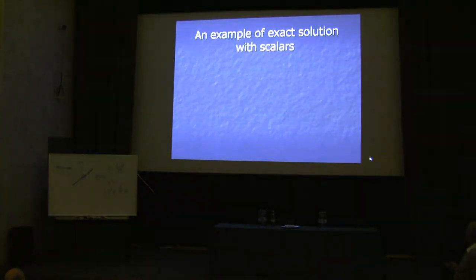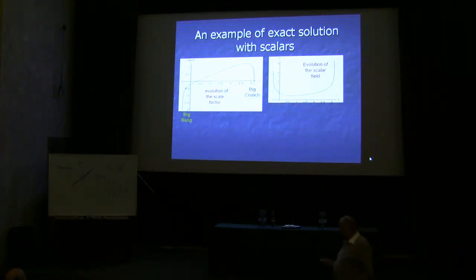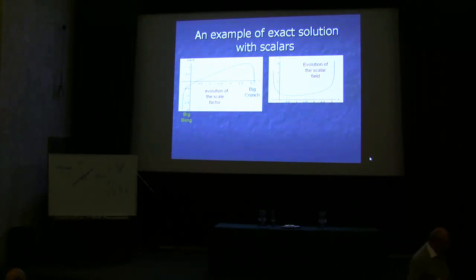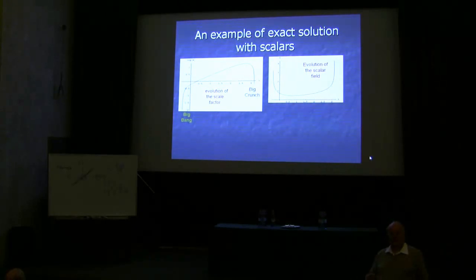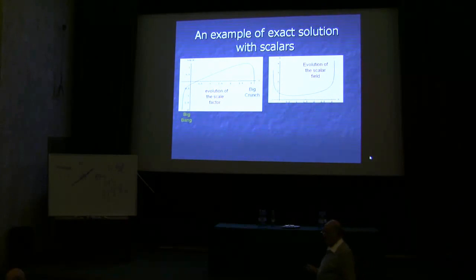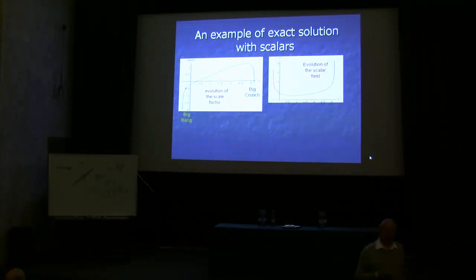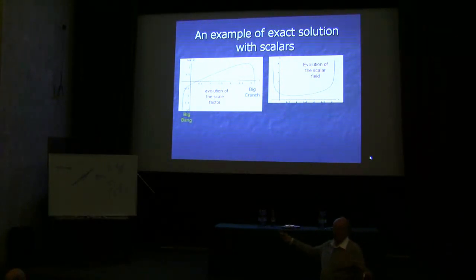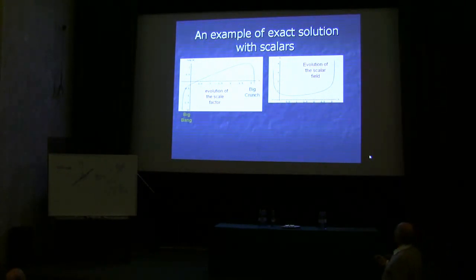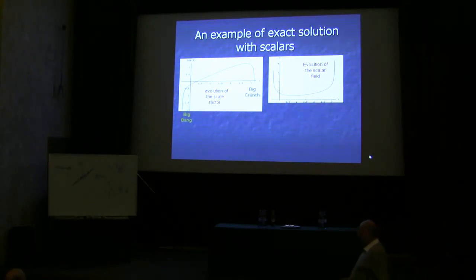We have found a very simple model that provides something surprising. It is a dogma that with a flat space you will have indefinite expansion. This is not necessarily so. I am going to present an exact solution where, with flat space, we have a big bang and a big crunch — like in a closed universe. The only difference is that the big bang and big crunch occur at the corners of your parameter space, so you will never discover them by numerical solutions — you would only see the central part of the curve, which looks like inflationary behavior.